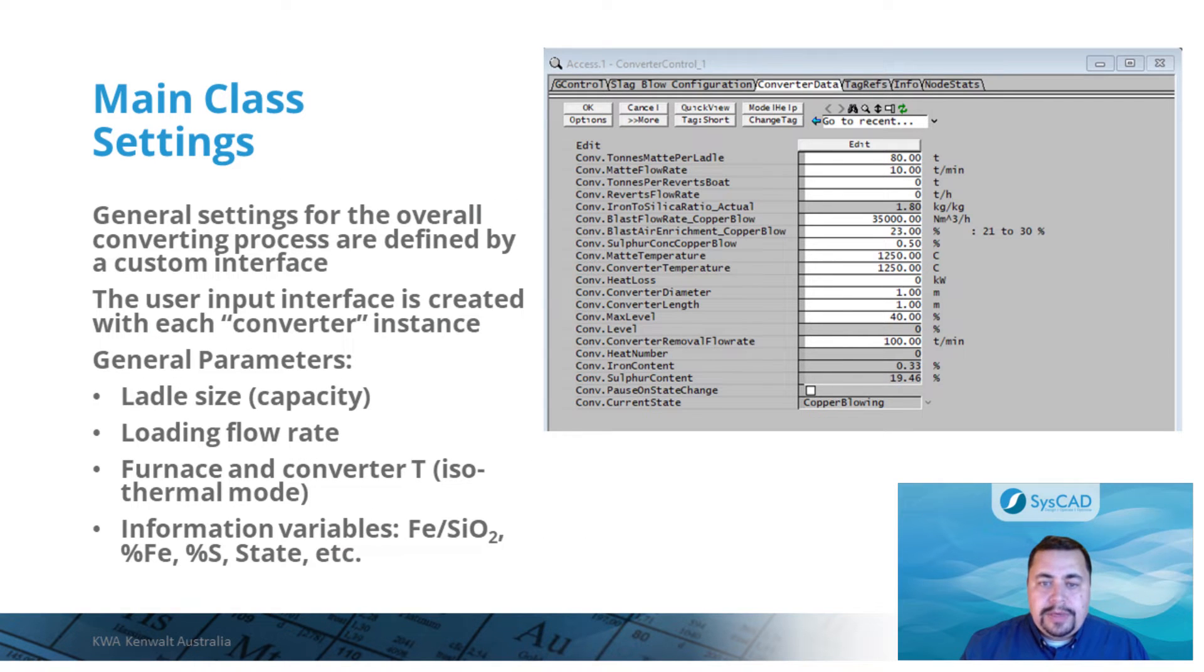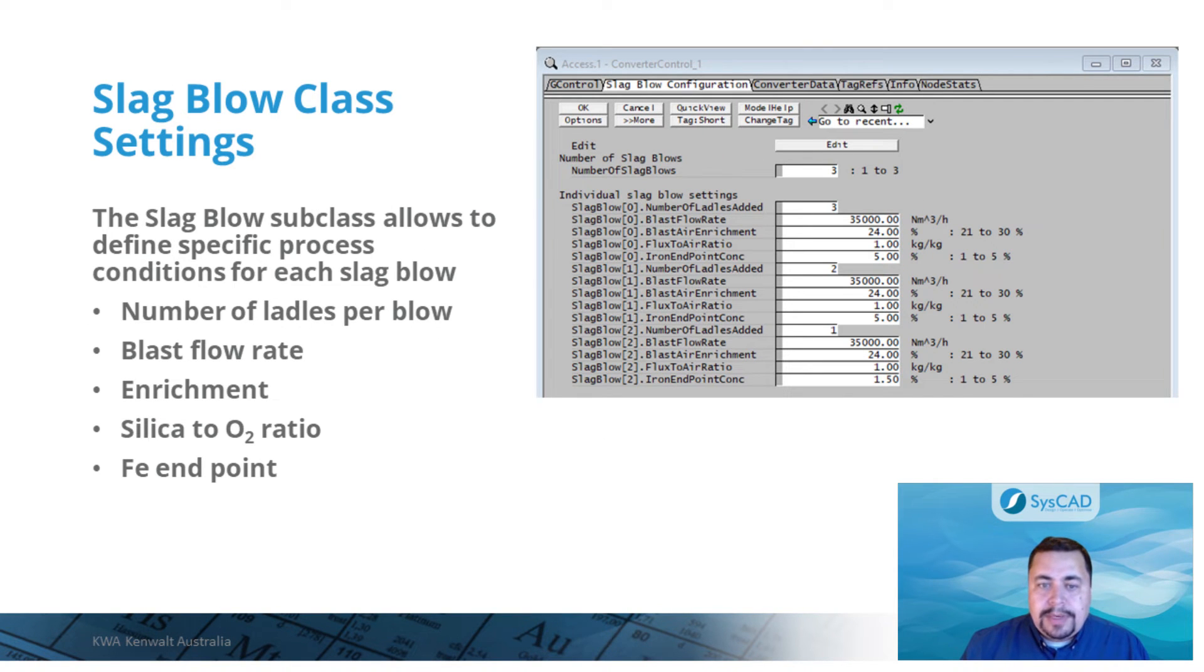Here is a view of the main converter class page generated by the PGM code. In this page, general process settings are set, for example, the size of the matte ladles, process temperature, flow rates, etc. Also, information variables can be displayed, such as actual iron-to-silica ratio, percentage iron and sulfur in matte or blister, process state, etc. The slag blow subclass has its own page, where specific parameters for each slag blow can be defined. In this example, settings for a converter cycle with three slag blows are shown.